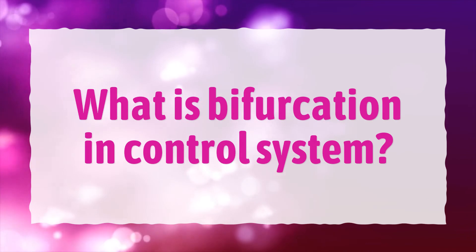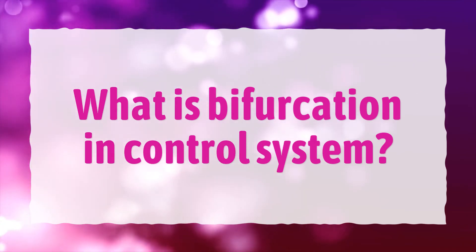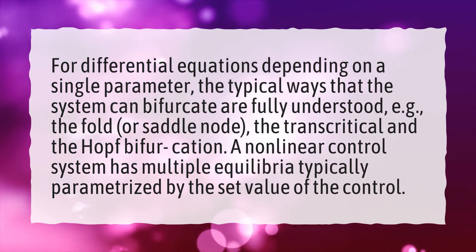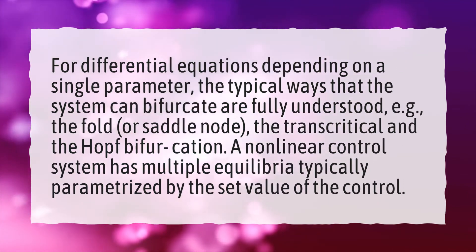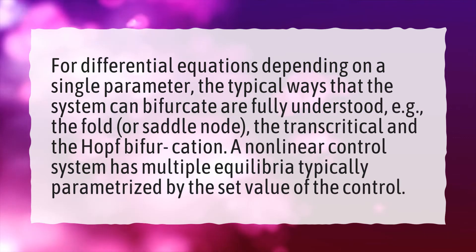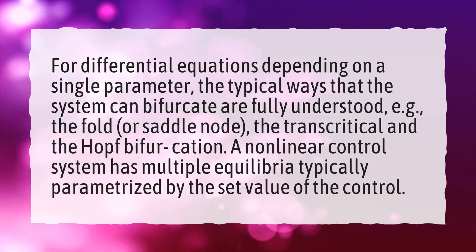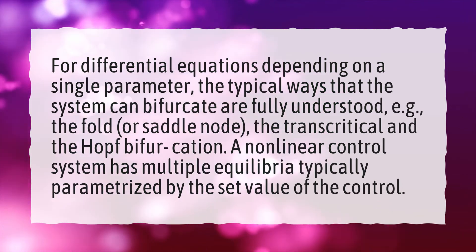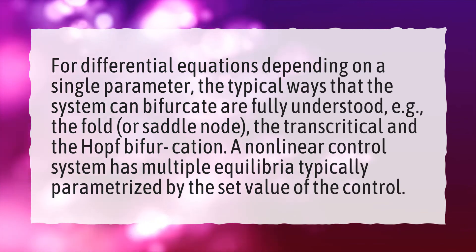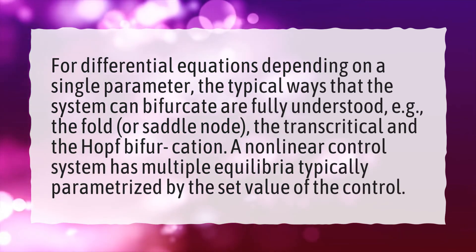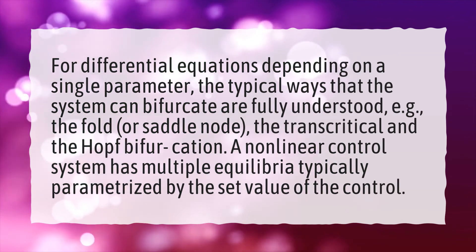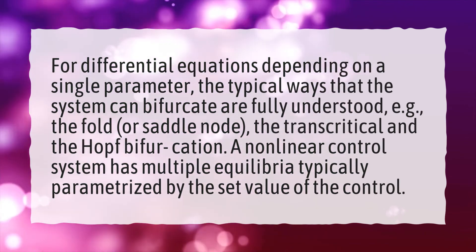What is bifurcation in control systems? For differential equations depending on a single parameter, the typical ways that the system can bifurcate are fully understood — e.g., the fold, or saddle node, the transcritical, and the Hopf bifurcation. A non-linear control system has multiple equilibria, typically parametrized by the set value of the control.